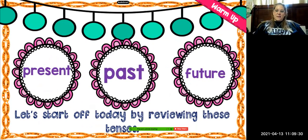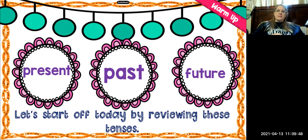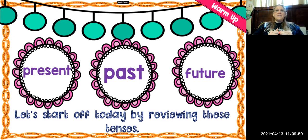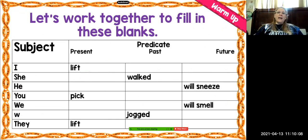Let's start today by reviewing the tenses. We have present tense, past tense, and future tense. Present tense means it's happening right now, and sometimes a present tense verb ends with an S. Past tense means it already happened, and we know it's past tense because it almost always ends with E-D. A future tense verb means it has not happened yet — it's going to happen at a later point, and we usually use the word "will" in front of it.